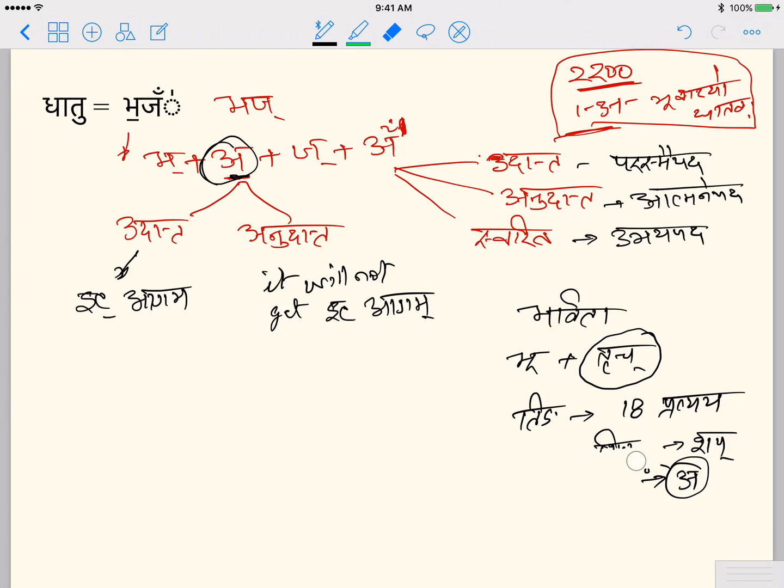So these are the sarvadhatukas. And then whatever is left, Panini uses very frequently this technique. He defines certain criteria and calls the rest as this. So once he defines sarvadhatuka, he said whatever is not tingshit will become ardhadhatuka. So that's how this will become ardhadhatuka pratyaya. So once it becomes ardhadhatuka pratyaya.